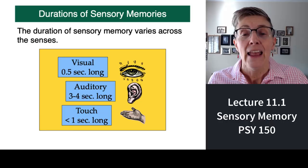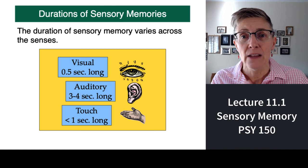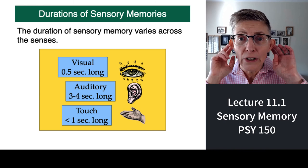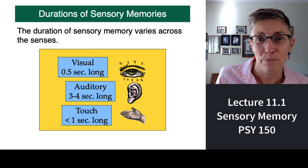To wrap it up: we talked about three different procedures — whole report, partial report, and partial report with delay. The partial report procedure tells us that sensory memory has a very large capacity. The partial report procedure with delay tells us that the duration of sensory memory is very, very brief. Each sensory system also has a different duration: visual sensory memory lasts about half a second, auditory memory lasts three to four seconds, and haptic or touch memory lasts a little less than a second.